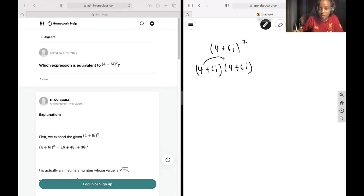We could use FOIL. So 16 plus 24i plus another 24i.